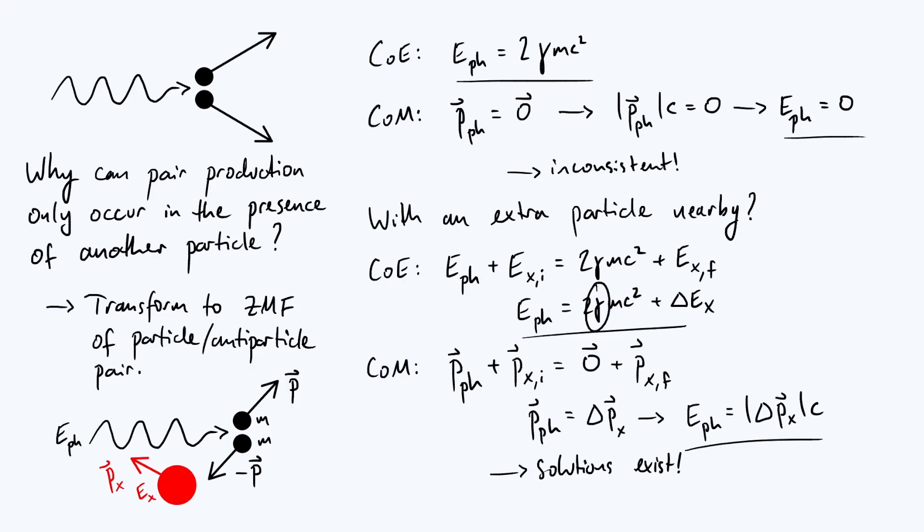I think the reason for this is just because nuclei have large charges compared with individual subatomic particles and this is an interaction that's governed by the electromagnetic force and things with higher charges have a higher probability of interacting electromagnetically. So that's why you may have heard it said before that pair production only happens near a nucleus. Anyway, I think that's all for now. Thank you for watching and see you again soon.